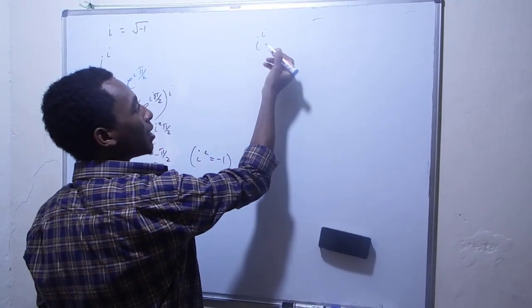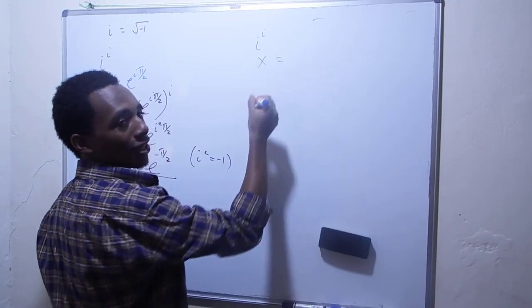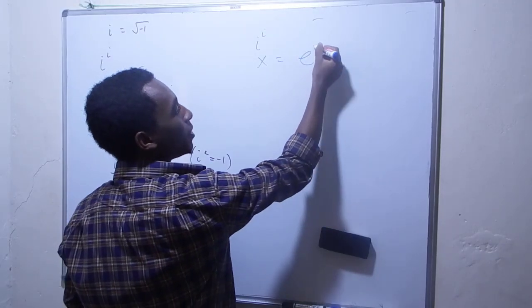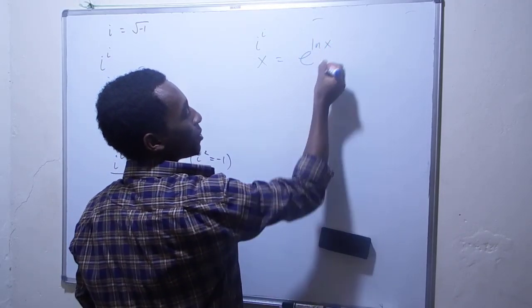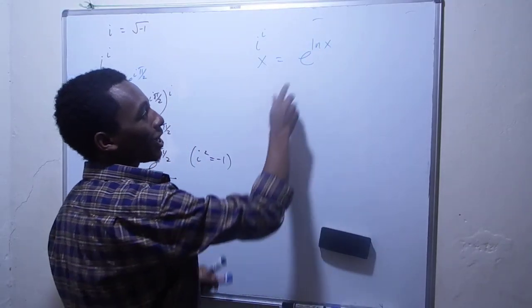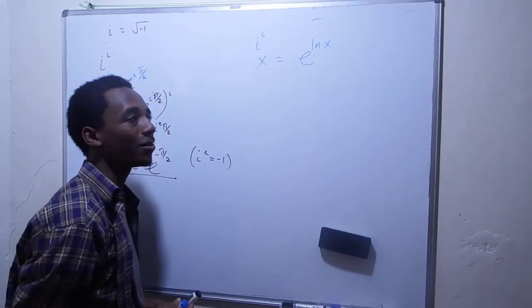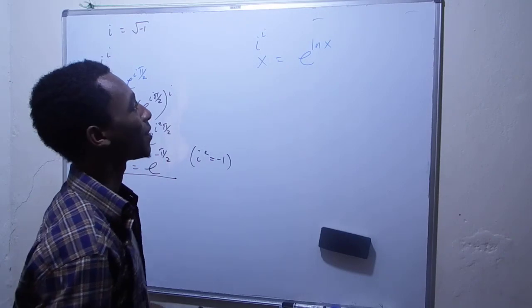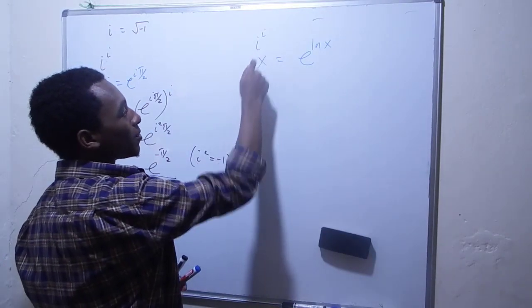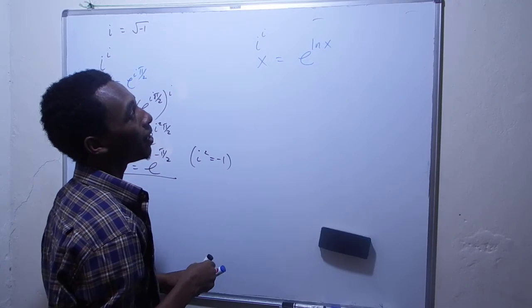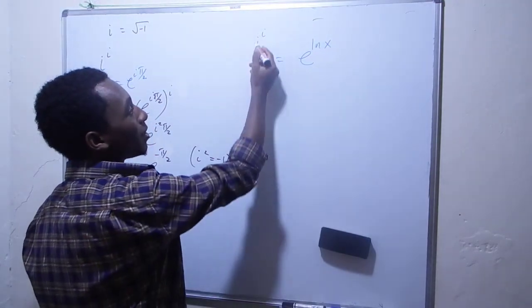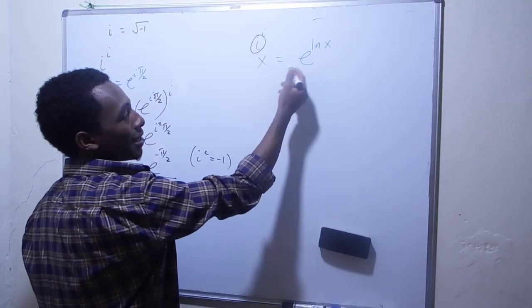If you have something like x, you can write that as e to the natural log of x, because e is the antilog of the natural logarithm. So I'm going to write the bottom i in this form.